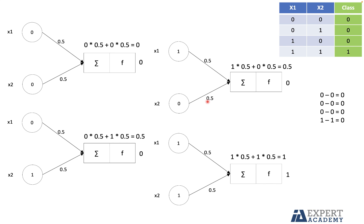We can conclude that the knowledge in neural networks is stored in the values of the weights. The goal of a neural network is to find the right weights to classify the data correctly. The process of adjusting the weights until correct classification is achieved is called the training of a neural network.